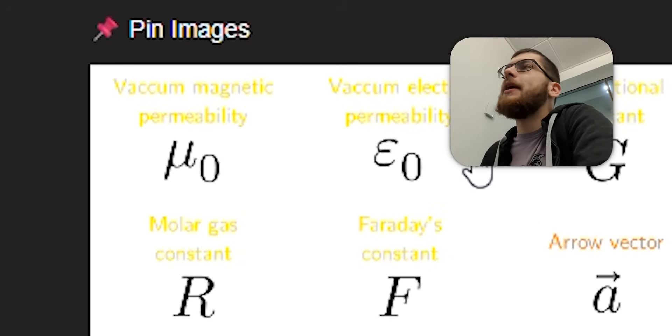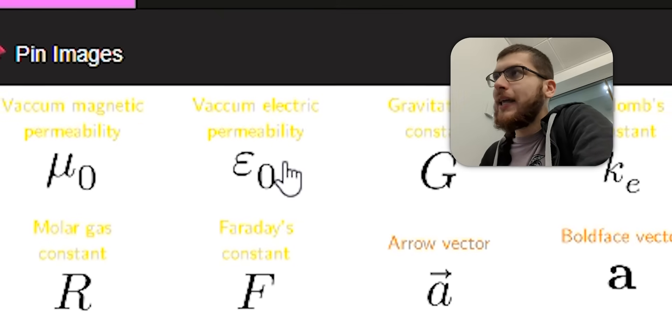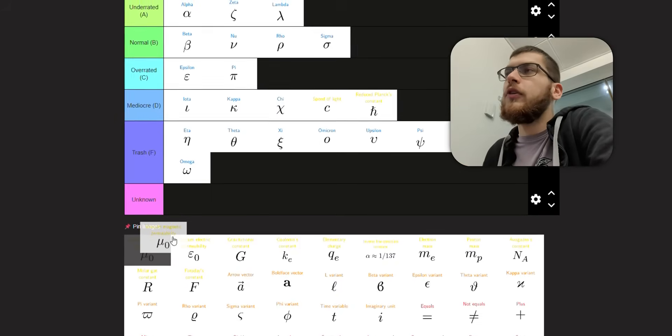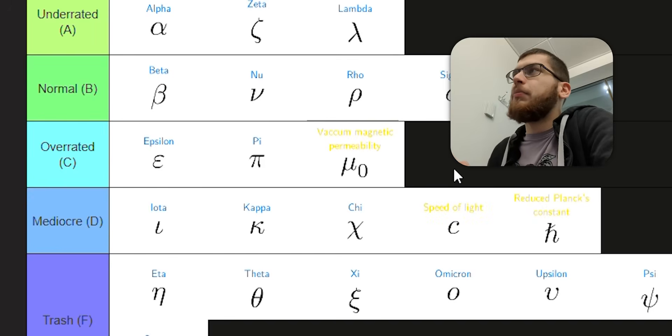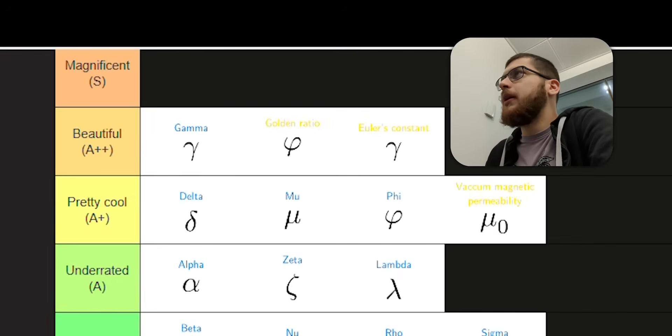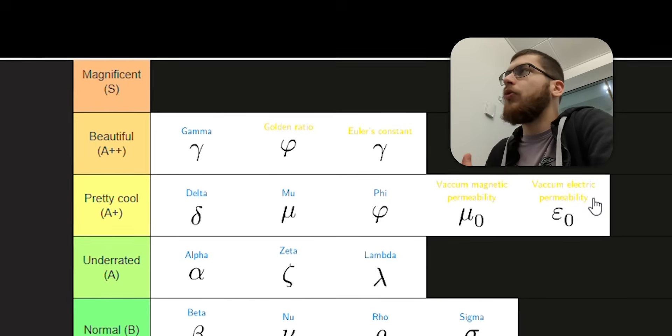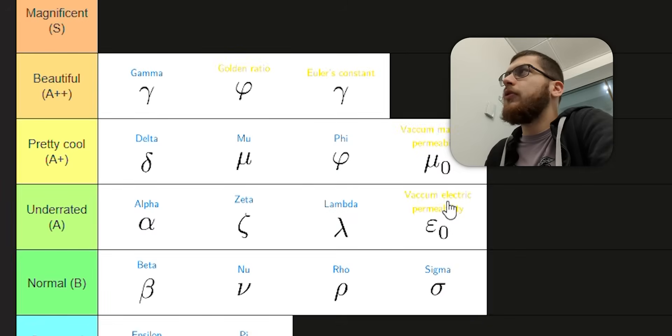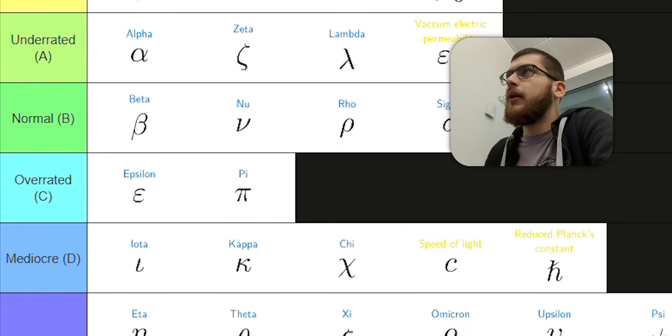Vacuum magnetic permeability and vacuum electric permeability. I remember this in physics. You have these equations which use the vacuum, and it's when charges are permeating through. Very useful constant. It's kind of pretty. It makes sense to put a zero there because that's like a vacuum. I'll put it in pretty cool. This one uses a slightly less cool symbol, so I'll put it in underrated.